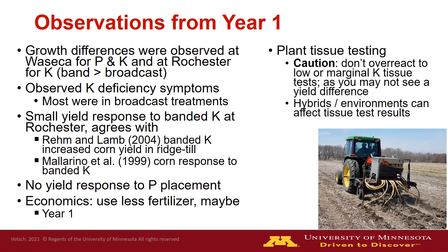So what are the observations from year one? We did see growth differences observed at both Waseca for P and K, and at Rochester but only for potassium. Whenever we saw early growth differences, the band was always better than the broadcast. We observed K deficiency symptoms, almost all in the broadcast treatments, especially at very low or low soil test levels for potassium. We did see a small yield response to banded K compared to broadcast K at Rochester, which agrees with Ream and Lamb and Mallorino. There was no yield response to P placement at either site in 2020. On economics — can we get by using less fertilizer? Maybe, but this is just year one, and we'll need at least one or two more years to make a good call.